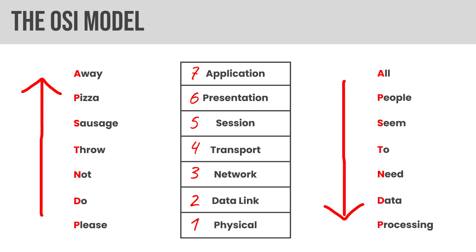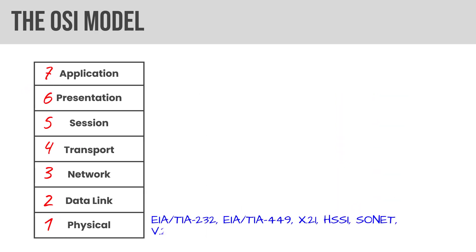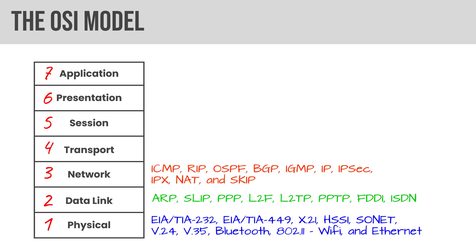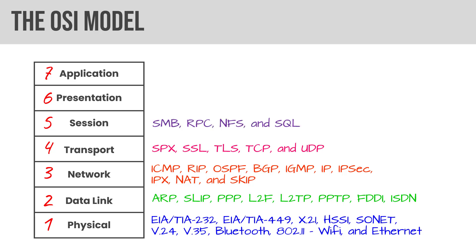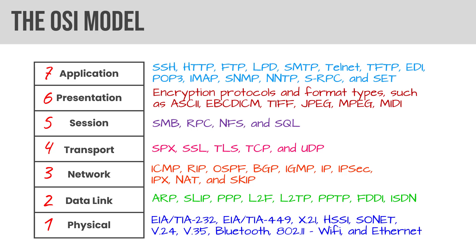You'll also be expected to be familiar with the protocols and services at each layer. At the physical layer, things like Ethernet. At the data link layer, ARP, SLIP, PPP. At the network layer, ICMP and IP. Layer four, the transport layer, we have TCP — SPX is the Novell equivalent from the old IPX/SPX days. At the session layer, server message block, RPC, Network File System, SQL Server. At the presentation layer, encryption protocols and format types. And at the application layer, host protocols. Make sure you're familiar with where protocols fall in the stack.